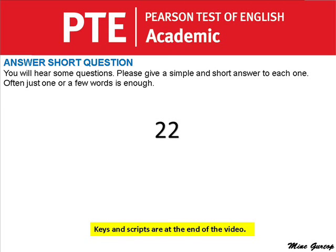What do we call it when the moon completely blocks out the light from the sun? What point of the compass is directly opposite east? Where do you pay for your purchases at a supermarket? What do you call an apartment that is below ground level — a basement apartment or a penthouse apartment?